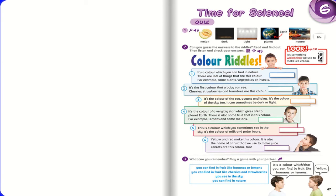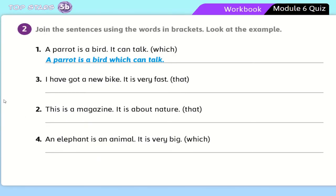This is the student book. Let's go back to the workbook and practice more. Join the sentences using the words in brackets, and look at the example as a guide. Number one: a parrot is a bird — it can talk. You are asked to use the word 'which' to join the two sentences. Remove the full stop and put the relative pronoun 'which'. A parrot is a bird which can talk. No need for the pronoun 'it' because you use the word 'which' instead. Number three: I have got a new bike — it is very fast. Use 'that' to join the two sentences.